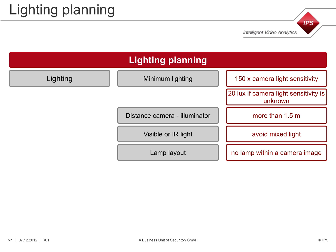Measure the light reflected back to the camera from the ground. The illuminator must be mounted at least 1.5 meters away from the camera. Avoid a mixture of visible light and infrared light in the same scene.